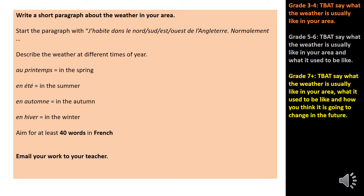Using your notes, can you write a short paragraph about the weather in your area? I would start the paragraph with: j'habite dans le nord, sud, est, or west de l'Angleterre. Normalement — normally — and what is the weather like? To make this longer, try writing about the weather in different times of the year: au printemps (in the spring), en été (in the summer), en automne (in autumn), en hiver (in the winter). As a foundation GCSE writing question, aim for at least 40 words in French, then email your work to your teacher.